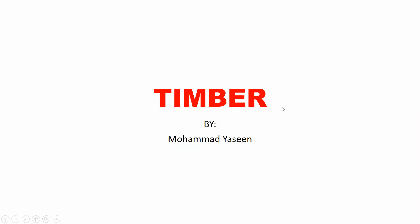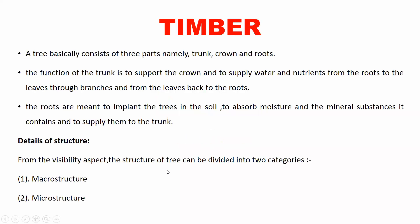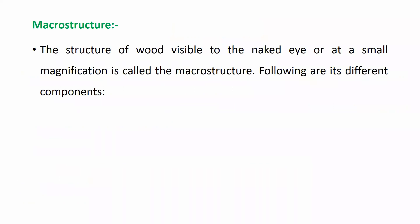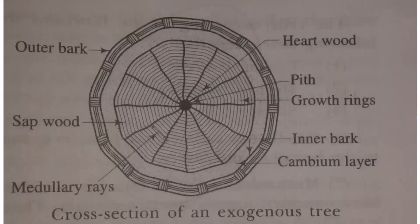Hello students, welcome back. As we were discussing regarding timber, there are two types of structures: macrostructure and microstructure. Macrostructure is visible to the naked eye, while microstructure requires very high magnification with the help of microscopes. These are the components of macrostructure that we will now discuss.